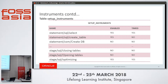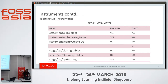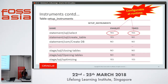The setup_instruments table has three columns: name, enabled, and timed. The name is the instrument; enabled says whether Performance Schema will collect statistics for that activity; timed says whether timing information will be collected. For example, statement/sql/select with enabled=YES and timed=YES means Performance Schema collects statistics and timing for SELECT statements. If create_table has enabled=YES and timed=NO, it collects statistics but not timing. If create_database has enabled=NO and timed=NO, statistics are not collected at all. These are configurable at runtime, so you can decide what to monitor while the server is running.